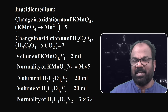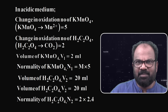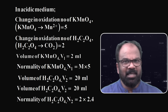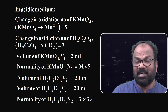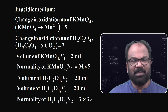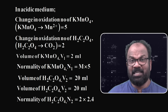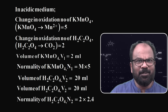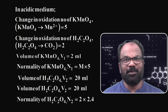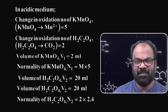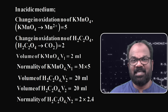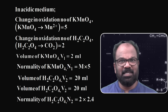We know in acidic medium, KMnO₄ is converted into Mn²⁺. In KMnO₄, the oxidation number of manganese is +7, and in Mn²⁺ it is +2. So the change in oxidation number of KMnO₄ in acidic medium is equal to 5. Similarly, for oxalic acid, the change in oxidation number is 2.